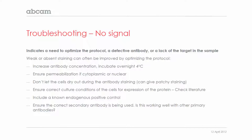Remember to permeabilise if it's a cytoplasmic or nuclear protein. Don't let the cells dry out during the antibody staining — this can give patchy staining, where some areas might have no staining whereas others have too much. Make sure you've had the correct culture conditions for expression of the protein, and check the literature for this. It's always good to include a known endogenous positive control, which will indicate if your procedure is working well. Ensure the correct secondary antibody is being used, and check that it's working well with other primary antibodies.